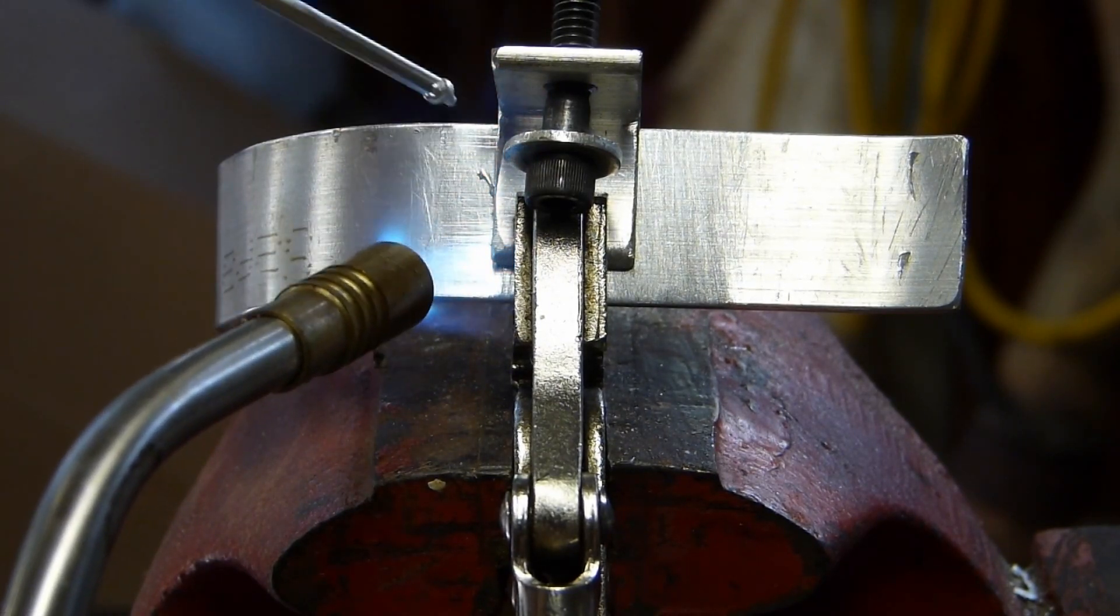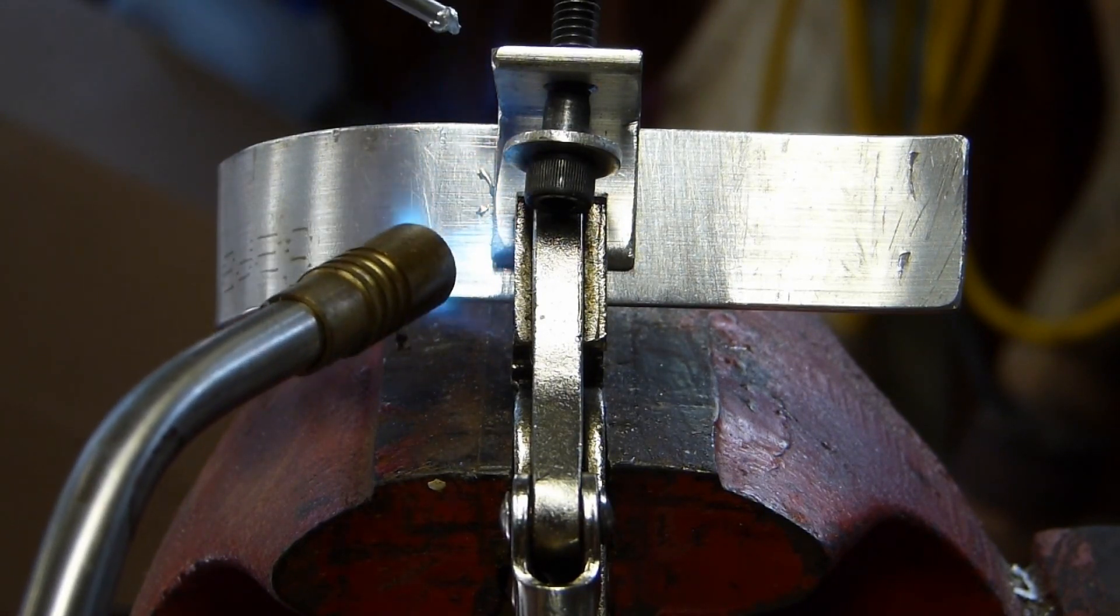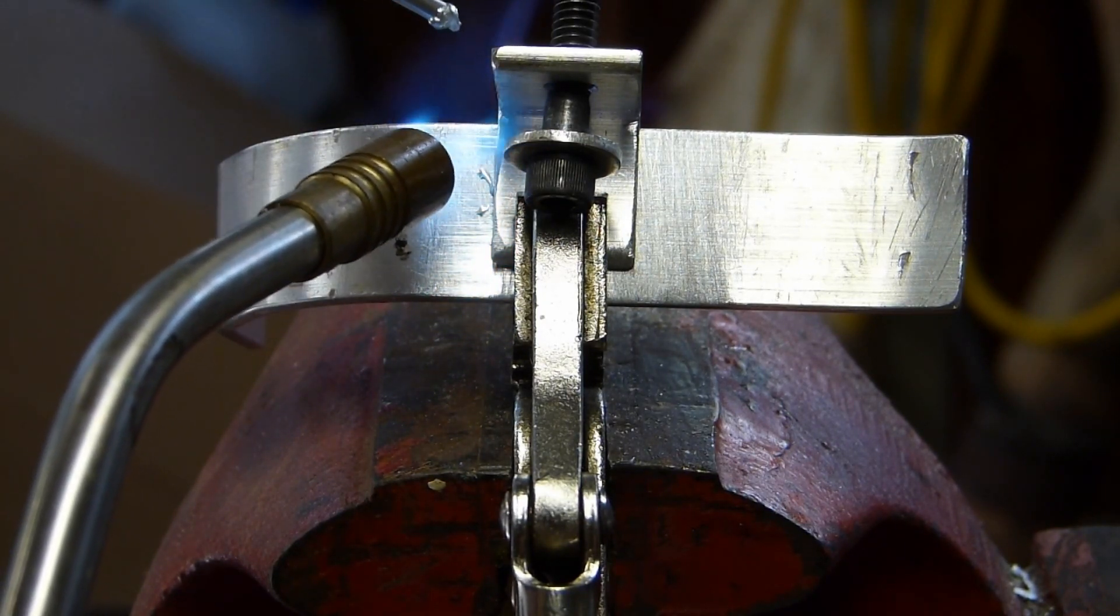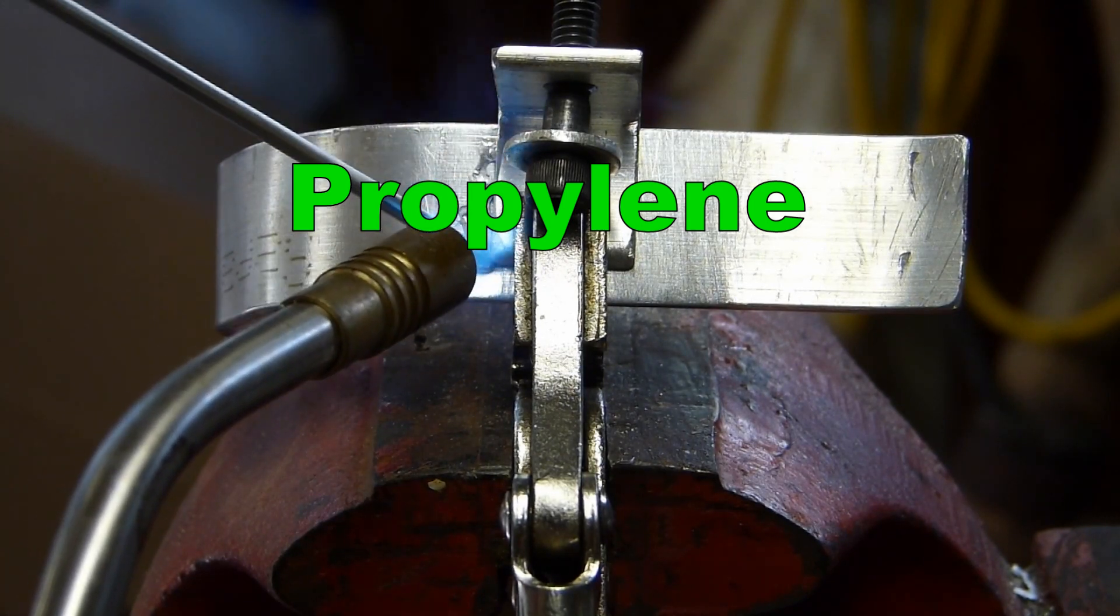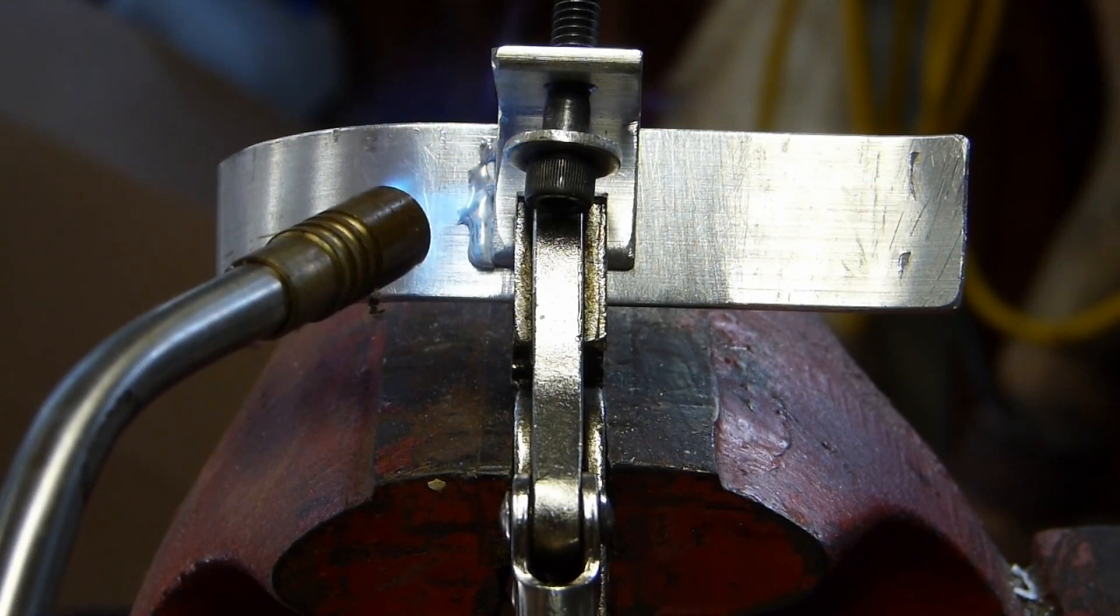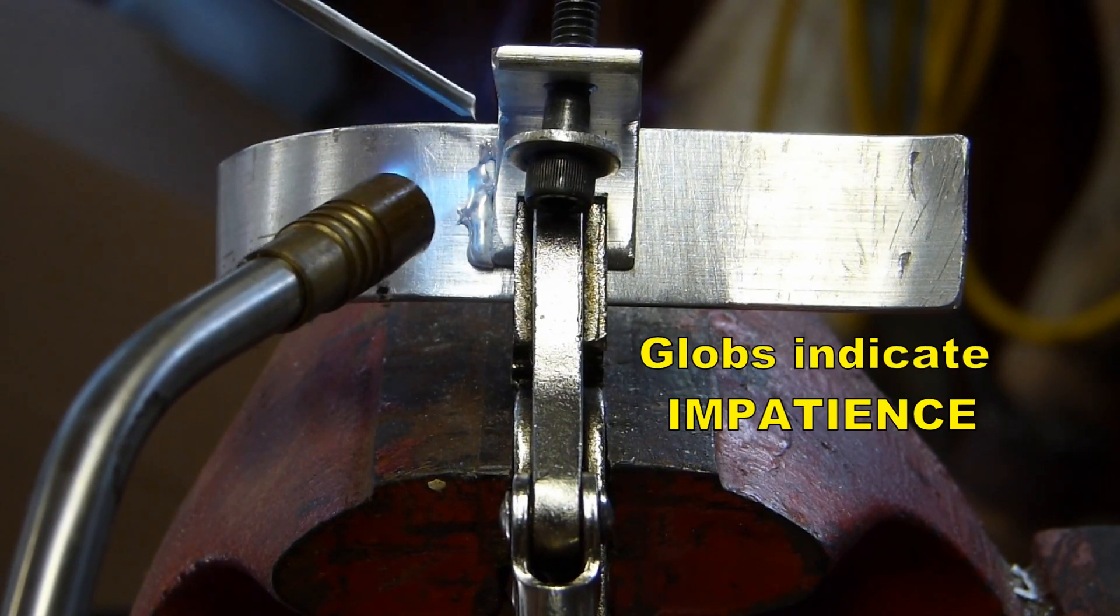So you can see there it's starting to melt and like at the beginning I am using propylene. Propylene I believe that's what you call it because MAP gas has been discontinued in 2008.